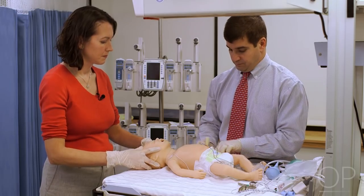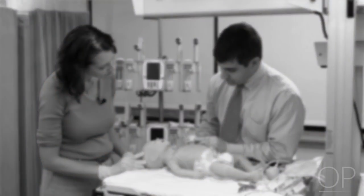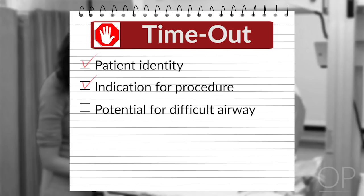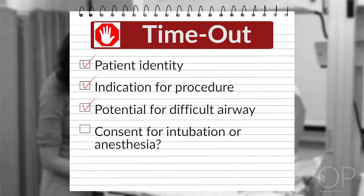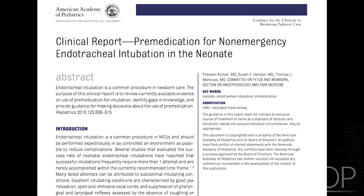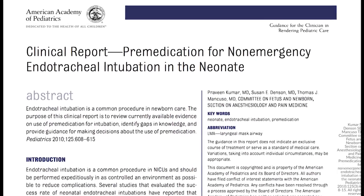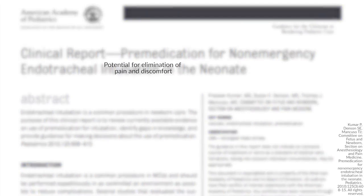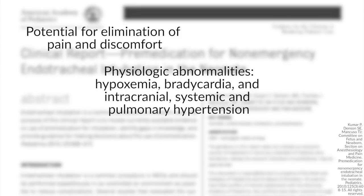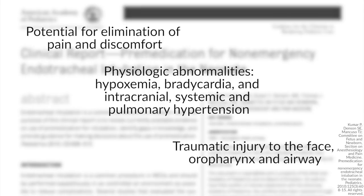If the procedure is not being performed emergently, time should be taken to perform a procedural timeout. During the timeout, verification of patient identity, indication for procedure, and potential for difficult airway should be reviewed. Consent for intubation or anesthesia can also be verified at this time. The American Academy of Pediatrics released a clinical report in 2010 in support of premedication for non-emergency endotracheal intubation in neonates. Benefits include the potential elimination of pain and discomfort, physiologic abnormalities including hypoxemia, bradycardia, and intracranial, systemic, and pulmonary hypertension, as well as traumatic injury to the infant's face, oropharynx, and airway.